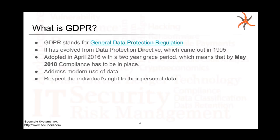GDPR has evolved from the Data Protection Directive which came out in 1995, and there had been no changes to it ever since. GDPR itself was adopted in April of 2016 with a two-year grace period, which means that by May 2018 compliance had to be in place. GDPR is in place to address modern use of data, because when the Data Protection Directive was introduced in 1995, data use was not as it is right now — not a lot of data was being collected. Now data collection and data awareness has become more prevalent, so this new regulation has been put in place to address that.